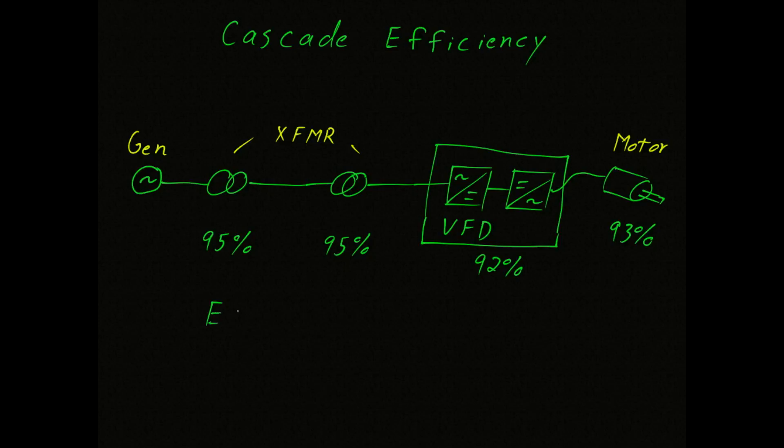In a previous video, we show that efficiency, which we sometimes symbolize as the lowercase Greek letter eta, which looks like an N. Anyway, efficiency is equal to power out over power in. And that's useful power out, not to be confused with the heat loss that we have in the system.